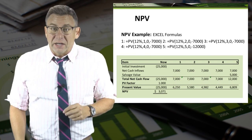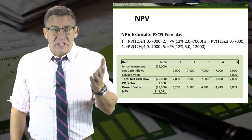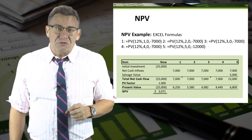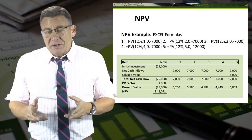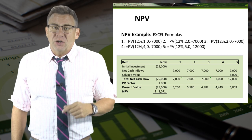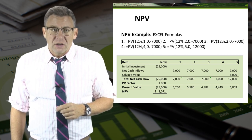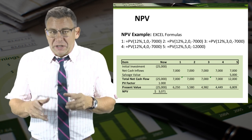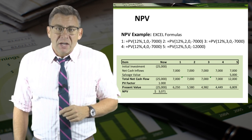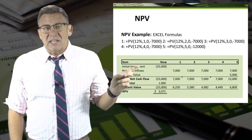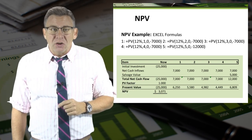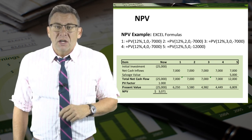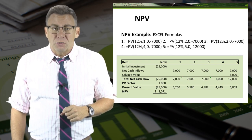I could have also calculated the present value of the cash flows using Excel. You can see the present value of each of the cash flows. When I net them together, I get net present value of $3,071. The difference from the tables is the rounding of the factors in the tables. I listed on the slide the Excel present value formula used to calculate the present value of the cash flows. You may want to pause the video and write those down.